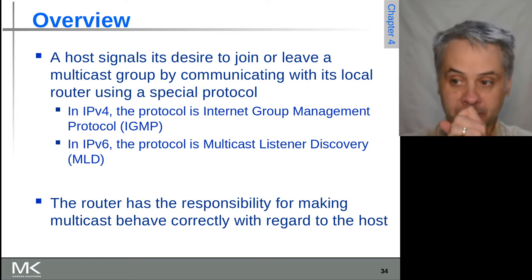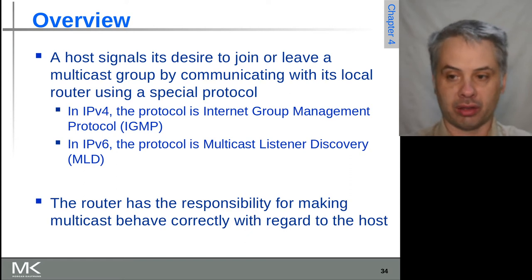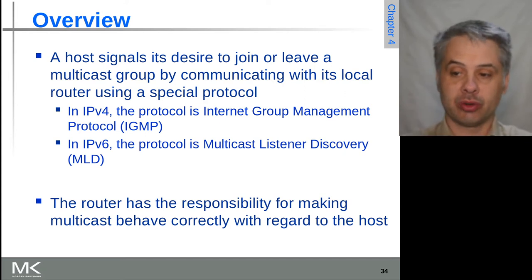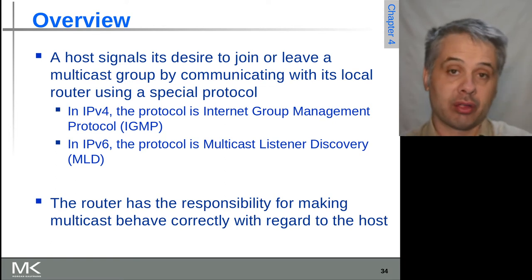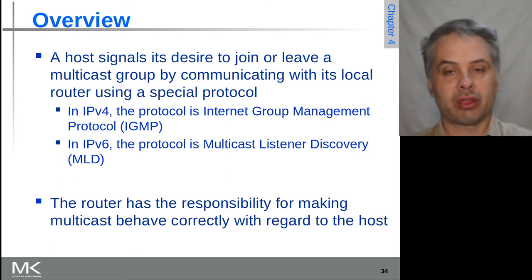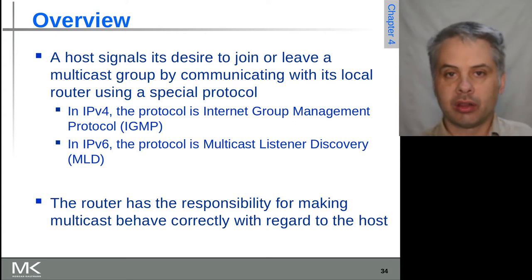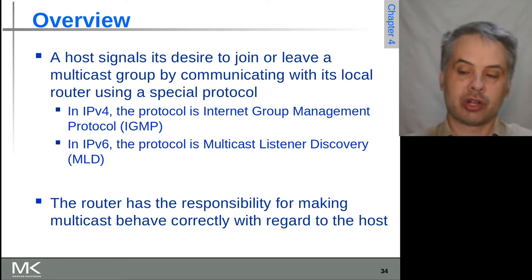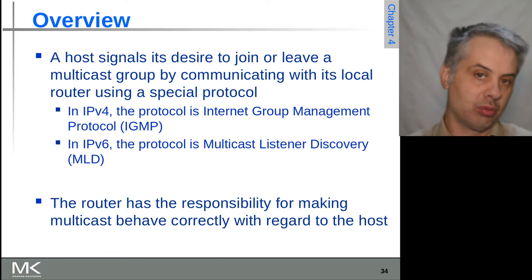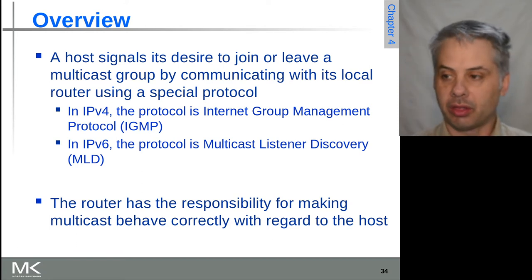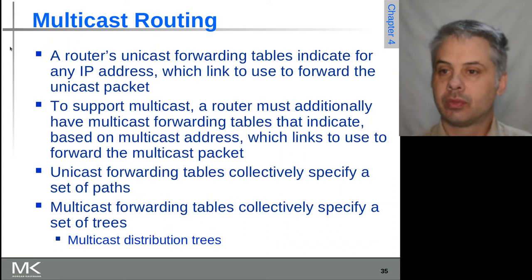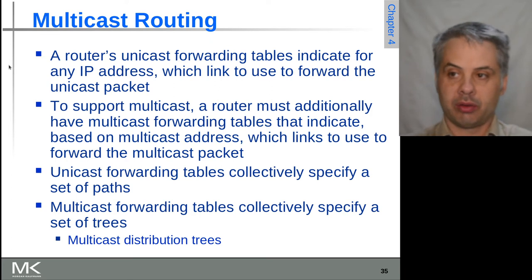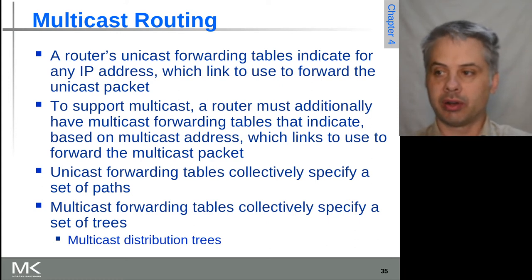In IPv6, this is Multicast Listener Discovery, MLD. The two protocols have the same effective role. The router has responsibility for making sure that the multicast works and behaves correctly. This has to be the case because you have traffic addressed to an address which is not naturally on a network the router controls, so the router needs to know that traffic addressed to that address does in fact need to be delivered to one or more of its connected devices. The router has a unicast forwarding table with information on the IP addresses that are local, under its connection.